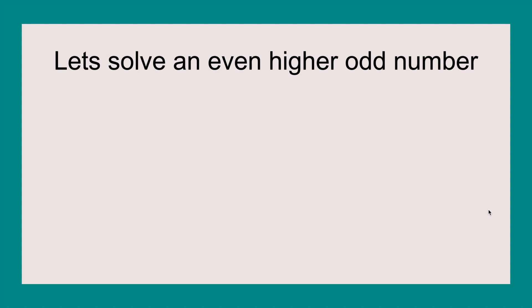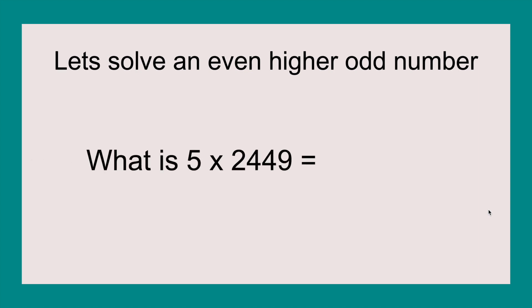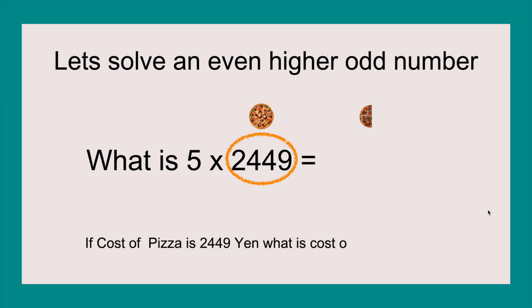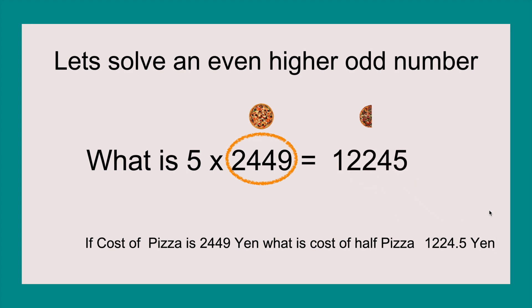Let's solve an even higher odd number. What is five times two thousand four hundred and forty-nine? Circle the two thousand four hundred and forty-nine, put the full pizza and then the half pizza. And then write out a sentence if we really need it: if cost of pizza is two thousand four hundred forty-nine yen, what is cost of half pizza? That is one thousand two hundred twenty-four point five yen. And that means the answer is twelve thousand two hundred and forty-five.